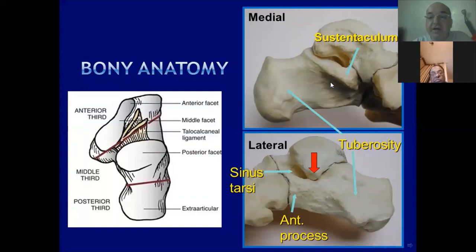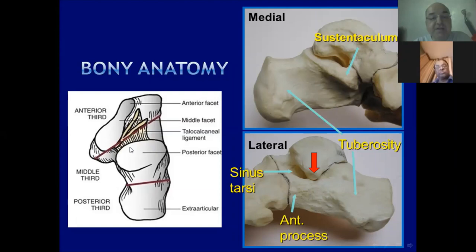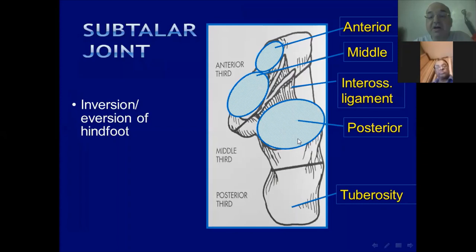The superior surface of the calcaneus: the anterior third includes the anterior and middle facets. The middle third includes the sinus tarsi and the posterior facet of the subtalar joint. The posterior third includes the extra-articular part — the tuberosity and body of the calcaneus. The posterior facet constitutes the subtalar joint with the undersurface of the talus.